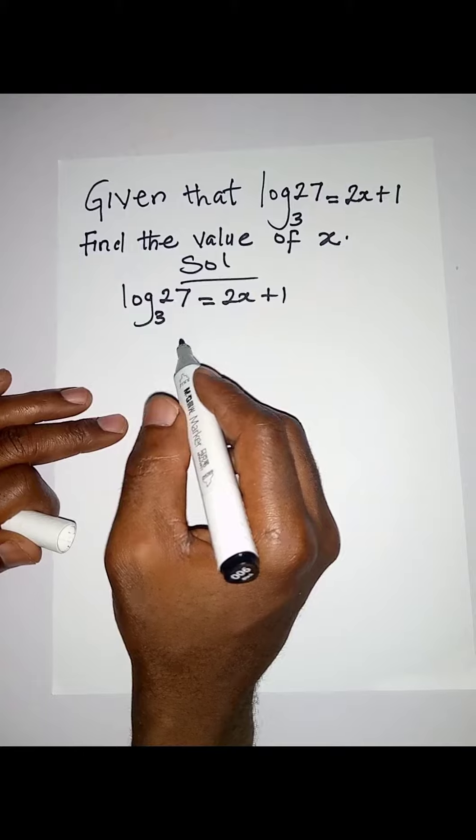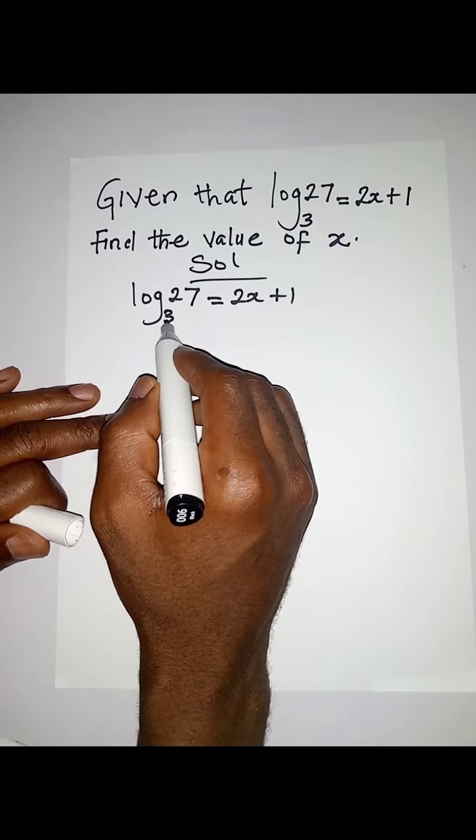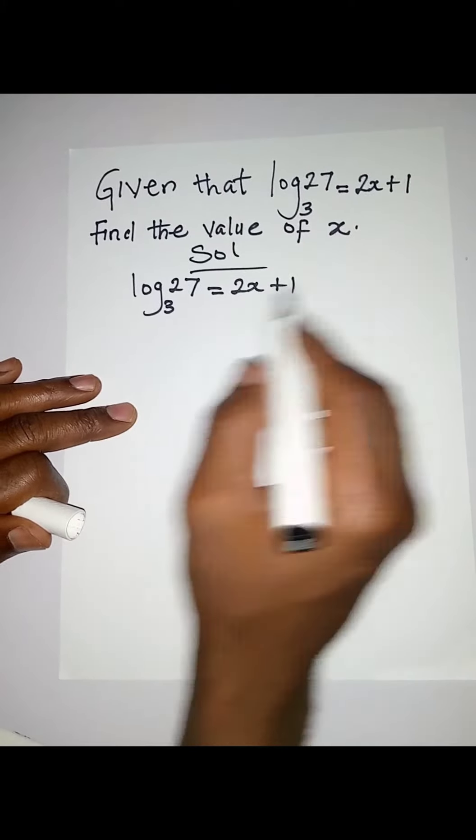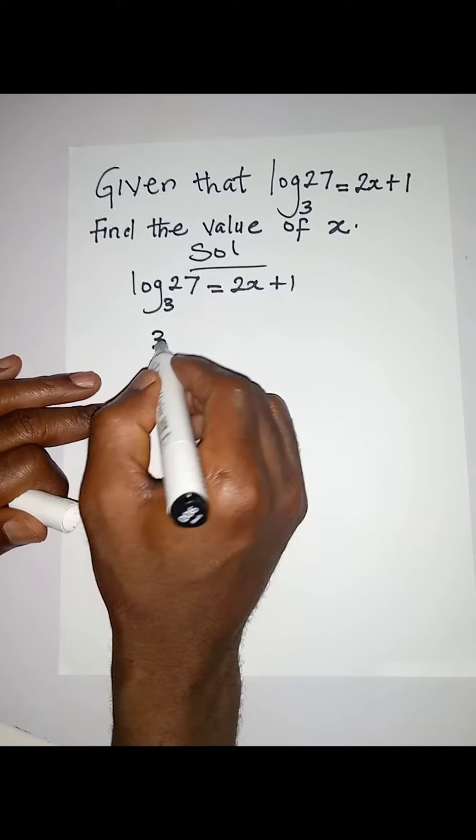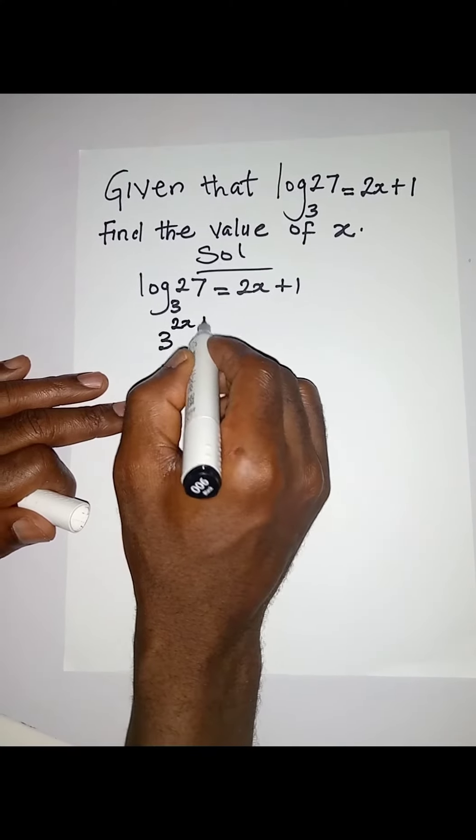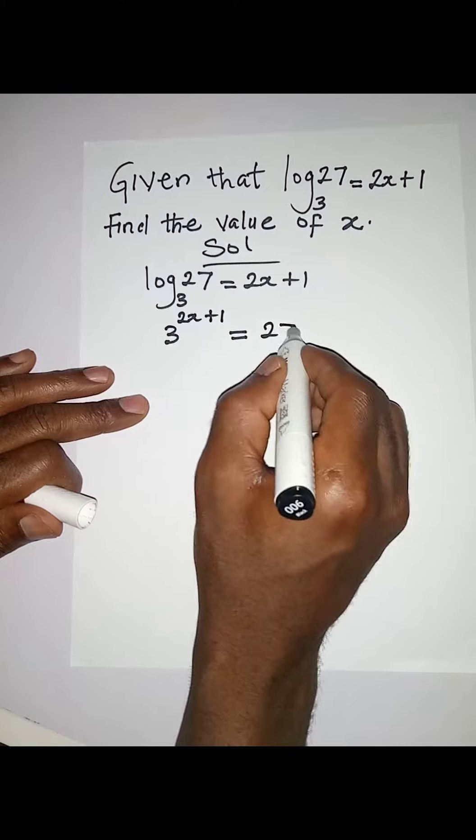We're going to have 3^(2x+1) = 27. Now because this is having base 3, 27 can also have base 3.